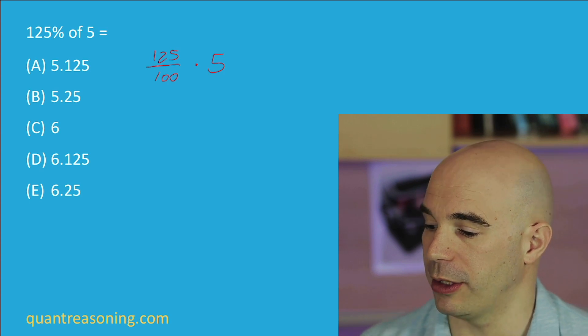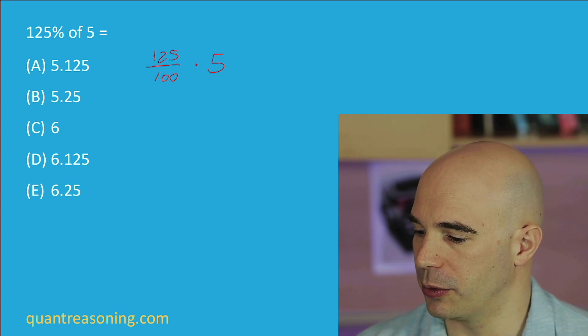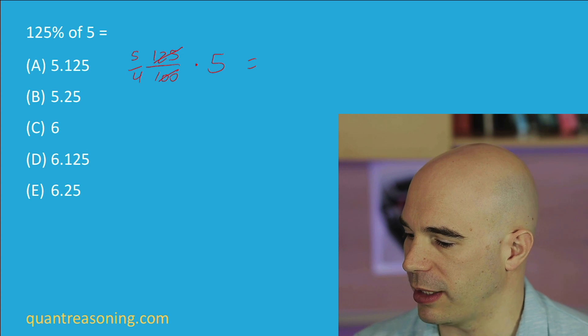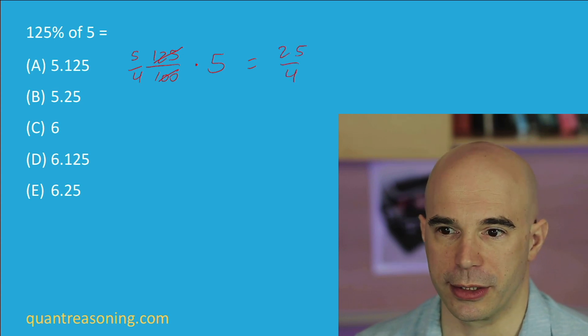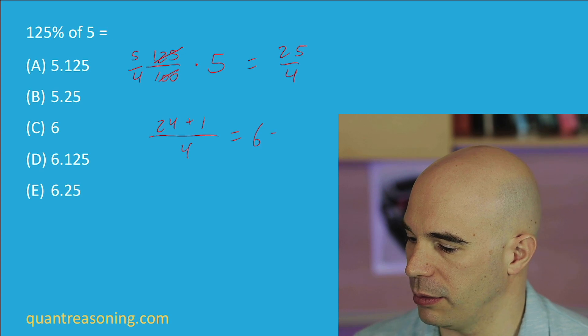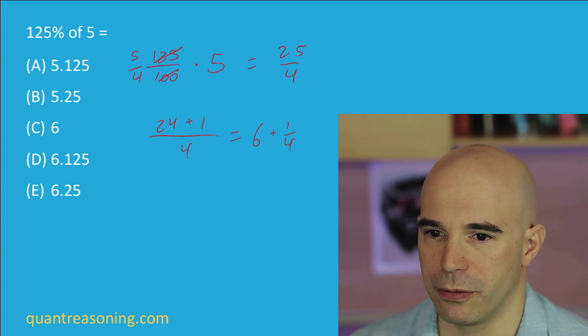So one way to solve this is to reduce by a common factor of 25 there, so you end up with 5 quarters. And then say 5 quarters times 5 is 25 quarters. And 25 quarters is 24 plus 1 over 4, which is 6 plus 1 fourth, or 6.25.